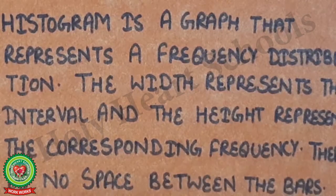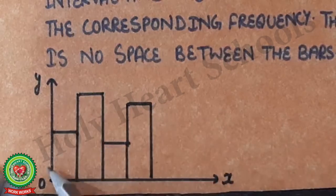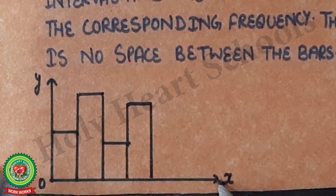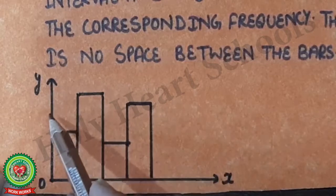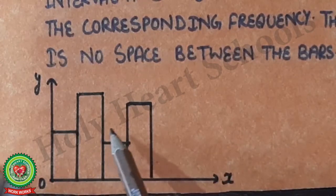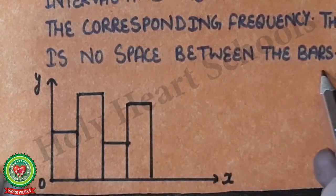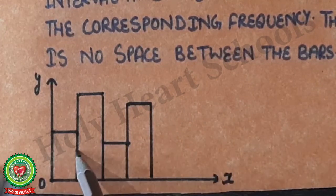There is no space between the bars. See this sample — it will be one L-shaped graph, like a bar graph. The difference between bar graph and histogram is that in a bar graph there is space between the bars, but in a histogram there is no space between the bars.